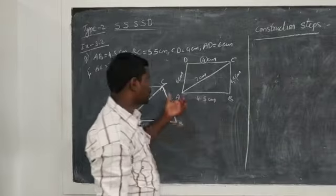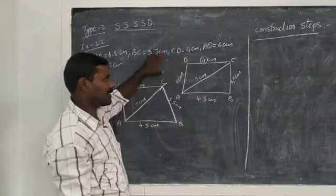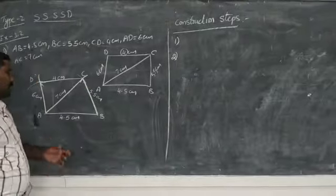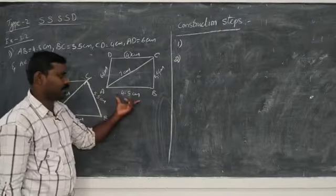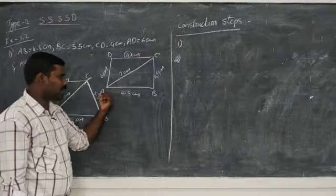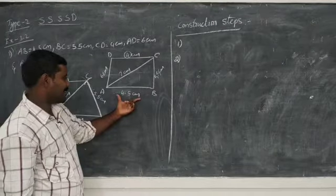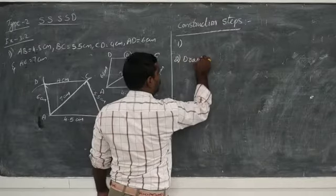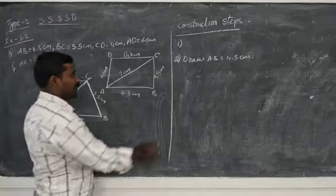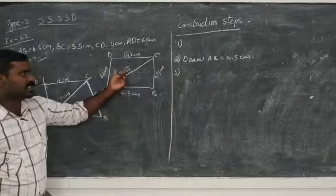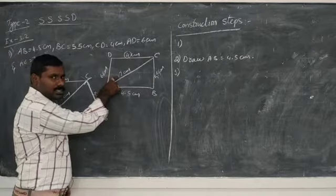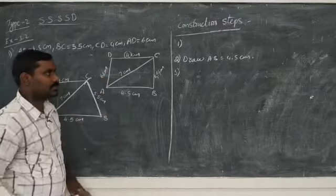Now write the construction steps. First step: draw the rough sketch of the given measurements. Second step: take 4.5 centimeters and draw one line segment AB. Third step: take 7 centimeters as a radius and draw one arc with center A.